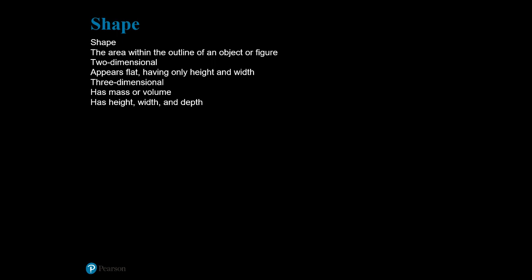The next visual element is shape. While the words shape, mass, and form are often used interchangeably, each has its own specific definition in the visual arts. Shape is usually defined as the area within the outline of an object or figure. In two dimensions, a shape appears flat — it will only have height and width. In three dimensions, shape will also have mass.